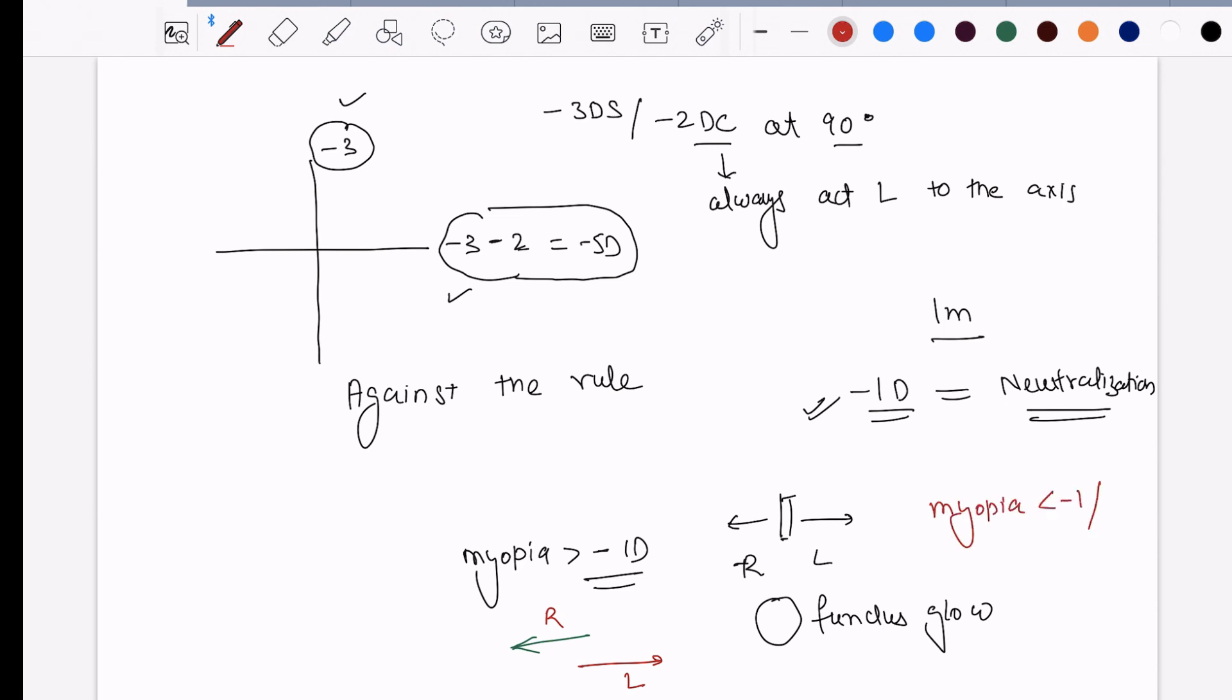If the myopia is less than minus 1, zero, or if it is hypermetropia, it would basically have with the glow movement. The movement of the streak as well as the movement of the glow would be in the same direction.